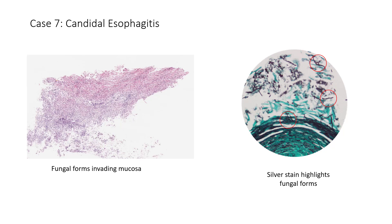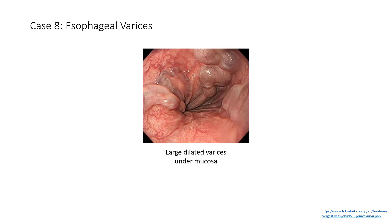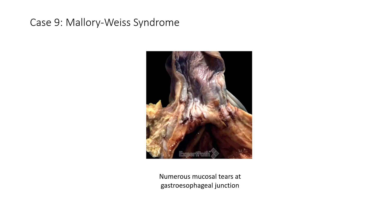Case 8 was esophageal varices. You can see large dilated varices under the mucosa, which are very susceptible to bleeding. Case 9 was Mallory-Weiss syndrome. This specimen demonstrates the gastroesophageal junction with numerous mucosal tears — here, here, here, and here. This is Mallory-Weiss syndrome.